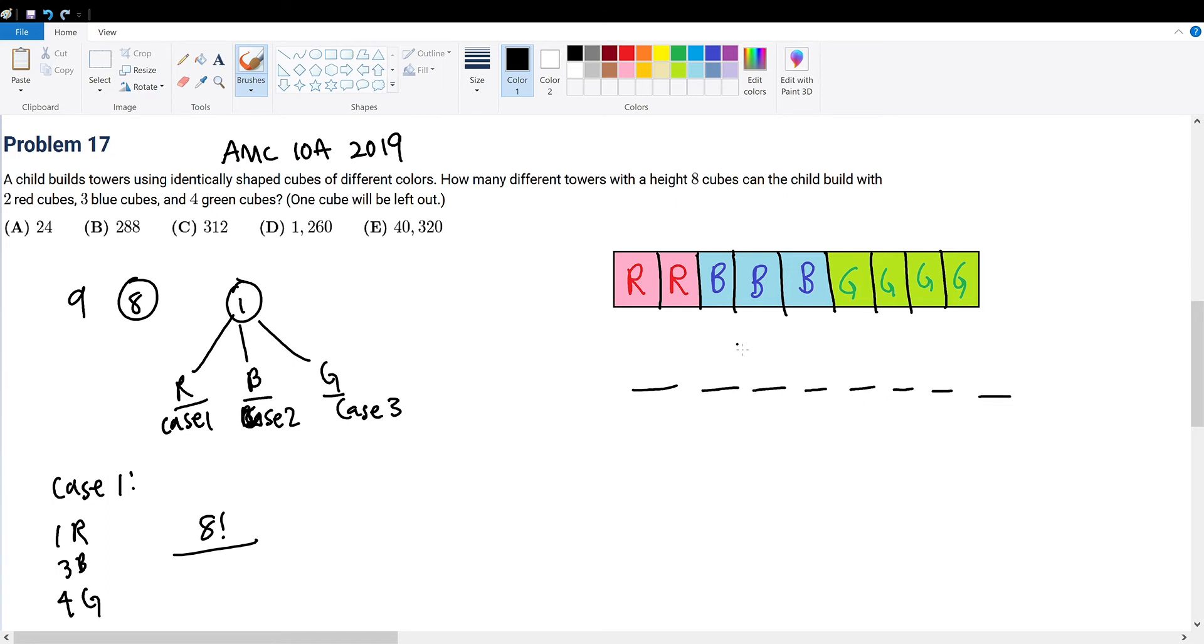So we have 8 selections, and these 8 selections are trying to be filled with a certain color cube. That is why we have 8 factorial. But what about the denominator? What we divide by is the number we're overcounting with.